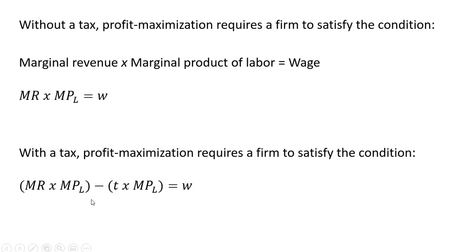When you hire an additional worker, that worker produces output. You can sell that output and your revenue goes up. Unfortunately, some of that additional output is taxed, so that has to be offset from the increased revenue. Factoring out marginal product of labor on the left-hand side, we have our profit maximizing condition in the face of a tax.